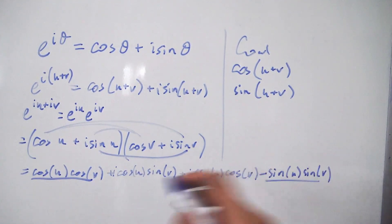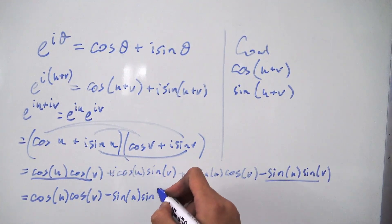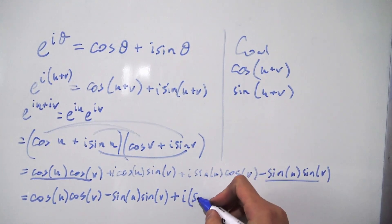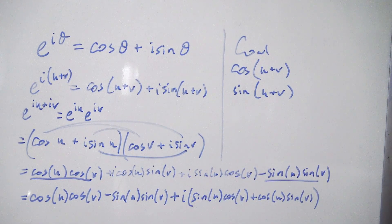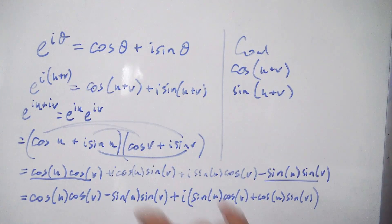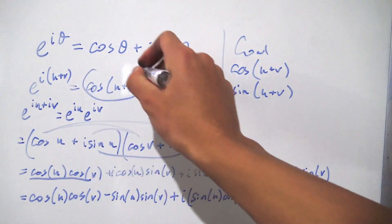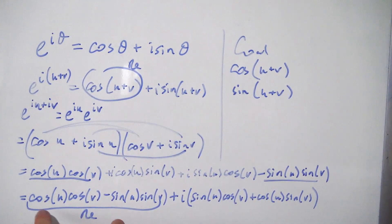The real parts are cosine of u cosine of v minus sine of u sine of v. The imaginary part, factoring out the i, gives us sine of u cosine of v plus cosine of u sine of v. Now that we've split it into real and imaginary parts, we can compare it to our original expression. The real part of the original expression is cosine of u plus v, and the imaginary part is sine of u plus v.